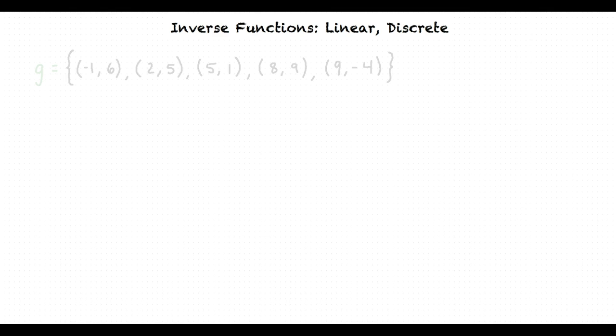We are given g equals the points (−1, 6), (2, 5), (5, 1), (8, 9), and (9, −4), and we are asked to find g inverse of 9.